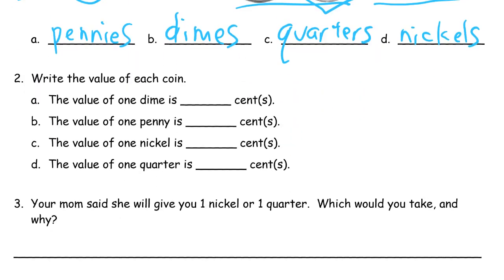Write the value of each coin. The value of one dime is ten cents, the value of a penny is one cent, a nickel is five cents, and a quarter is 25 cents.